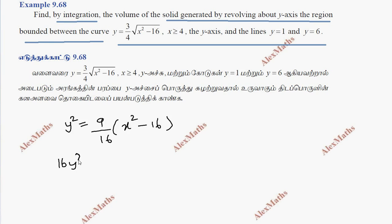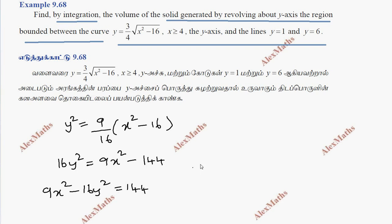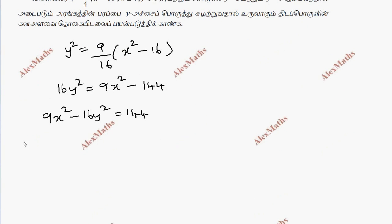So 16y squared equals 9. Then 9x squared minus 144, so 16y squared equals 144. This is a hyperbola in standard form. Dividing by 144 gives us the standard hyperbola form.